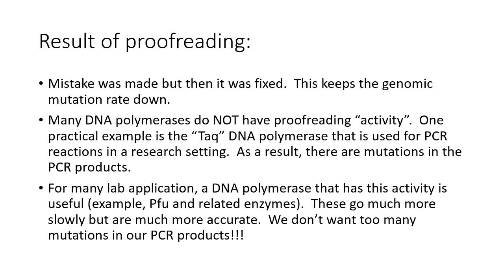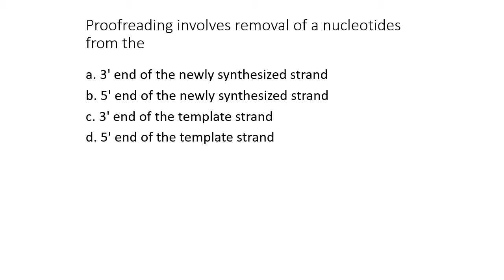Proofreading keeps the genomic mutation rate down. Many DNA polymerases do not have proofreading activity. One important example: the Taq DNA polymerase used for PCR reactions does not have proofreading activity. As a result, when you get PCR products, there are mutations in them. For many applications, we choose a DNA polymerase that does have proofreading activity, so there won't be as many mutations in the PCR product. It's much slower, but much more accurate.